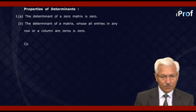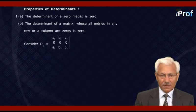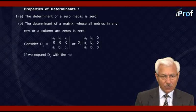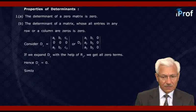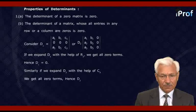Consider D1 with elements A1, B1, C1 in the first row, all zeros (0, 0, 0) in the second row, and A2, B2, C2 in the third row. And D2 with A1, B1, 0 in row one; A2, B2, 0 in row two; A3, B3, 0 in row three. If we expand D1 with the help of row 2, we get all zero terms, hence D1 equals zero. Similarly, expanding D2 with the help of the third column gives all zero terms, and hence D2 is also equal to zero. Thus the property is verified.